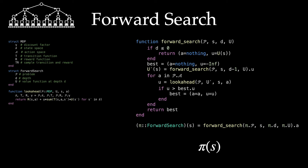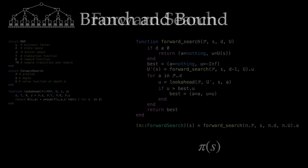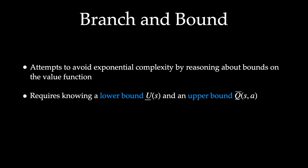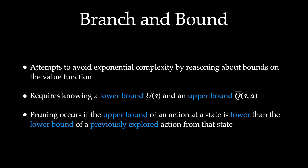Next we look at branch and bound, which is focused on avoiding exponential complexity by reasoning about bounds on the value function. This requires a lower bound on the utility function and an upper bound on the action value function (Q function). With these bounds, we can prune parts of the search tree — pruning occurs if the upper bound of an action at a state is lower than the lower bound of a previously explored action from that state.